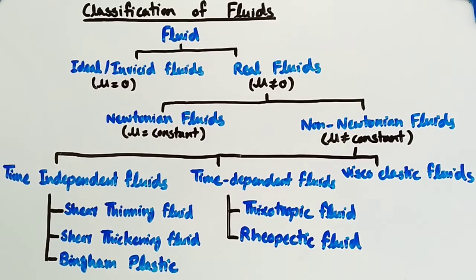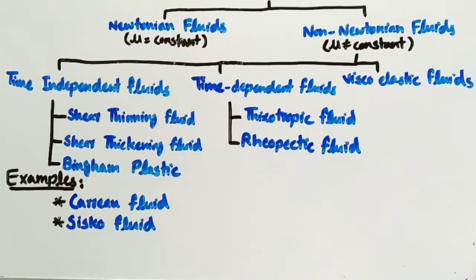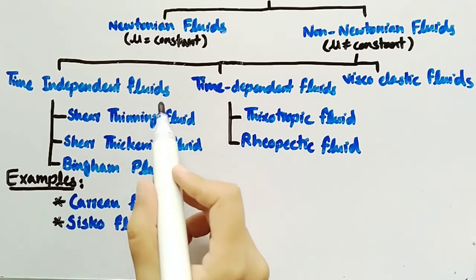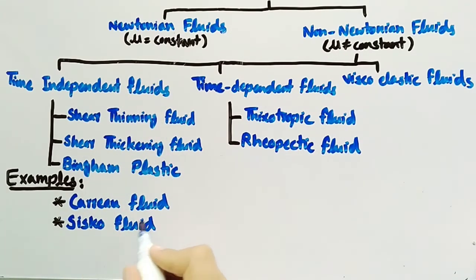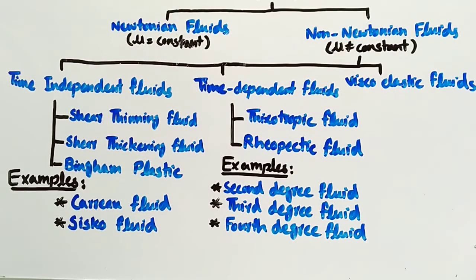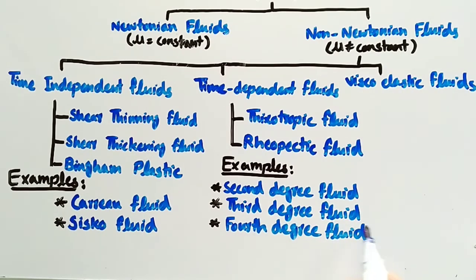Types of time-dependent fluids are thixotropic fluid and rheopectic fluid. Types of viscoelastic fluids are Caro fluid and Cisco fluid. Types of viscoelastic fluids also include second-degree fluid, third-degree fluid, and fourth-degree fluid.